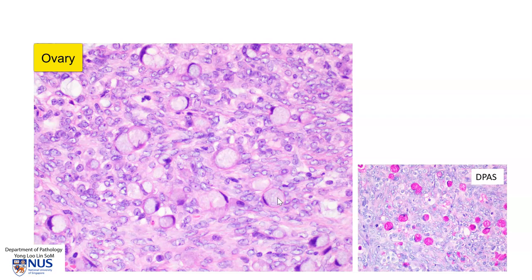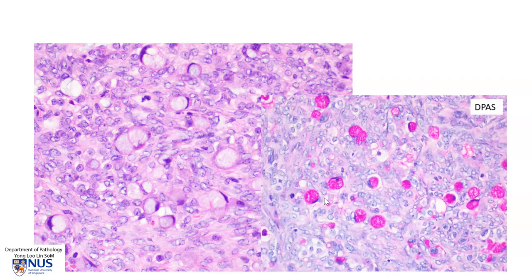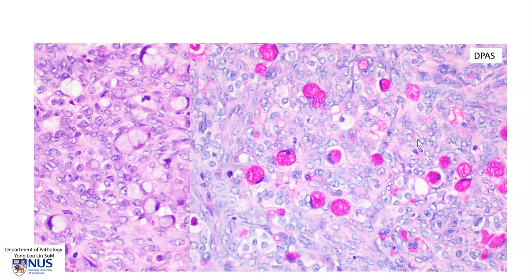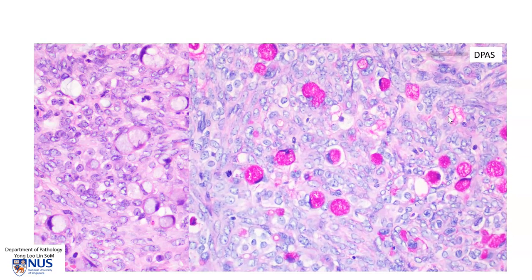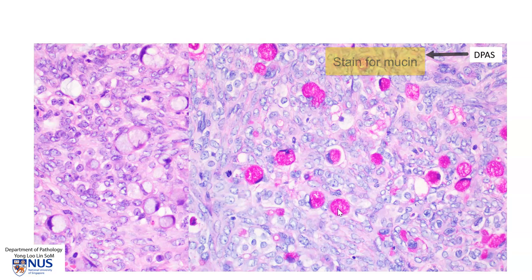This kind of pinkish, grayish, bubbly material is mucin. And this is a special stain that we do called D-PERS — periodic acid-Schiff with diastase digestion. Here we have this bright magenta-appearing intracytoplasmic mucin, and this is classical for signet ring cell adenocarcinoma.